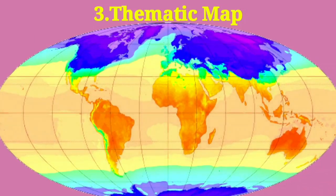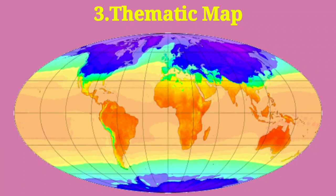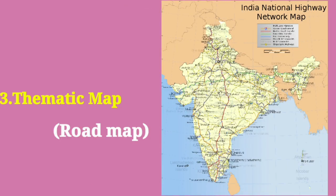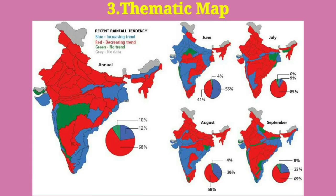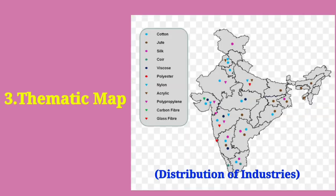Thematic maps are maps that focus on a particular topic. For example, road maps, rainfall maps, and maps showing the distribution of forests and industry.